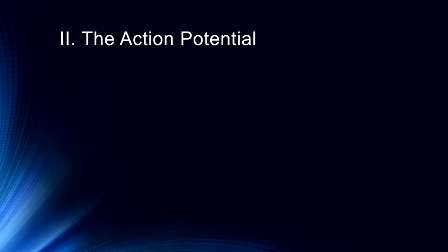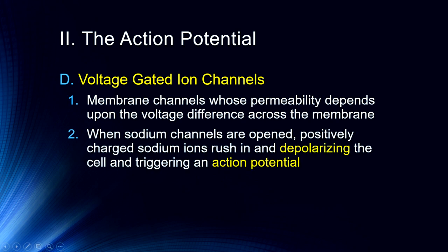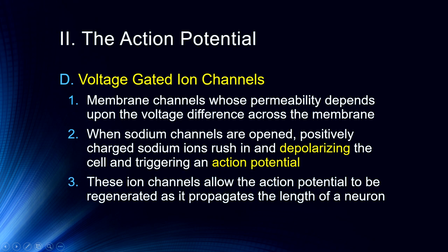This is occurring because of voltage-gated ion channels — membrane channels whose permeability depends upon the voltage difference across the membrane. This occurs when an excitatory postsynaptic potential has stimulated these ion channels sufficiently to trigger an action potential, producing this massive depolarization. When those channels are opened, positively charged sodium ions rush in and depolarize the cell, triggering an action potential. Sodium ions are primarily outside the cell, and that's part of what maintains the electrical difference; when they rush in, it depolarizes the cell.